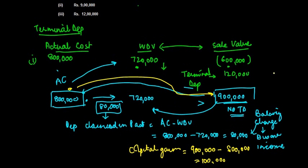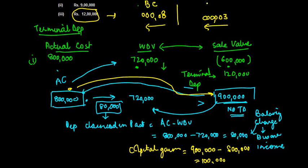Similarly in the third case when it is sold for 12 lakh, just find this out for yourself. I am writing the answers in reverse order for balancing charge and capital gain. See if these answers tie for you. Just write it in the reverse order and you will get the answers. This is the balancing charge, this is the capital gain.